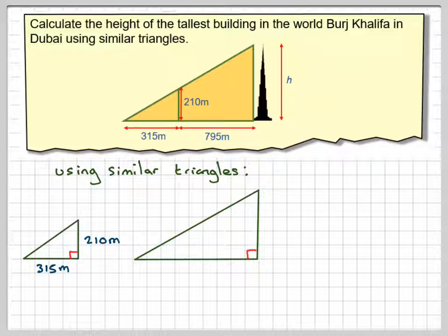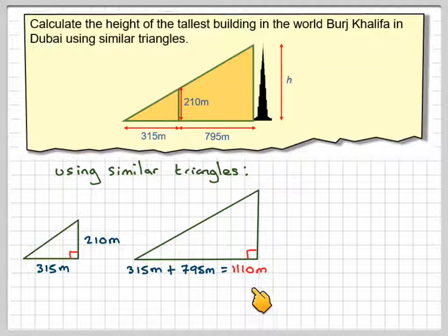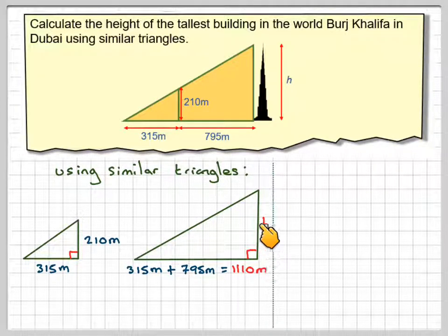So now we're going to be careful because this distance here is the addition of 315 plus 795, and that's equal to 1110 metres. And then this distance here that we want to find is the height.